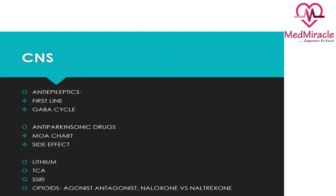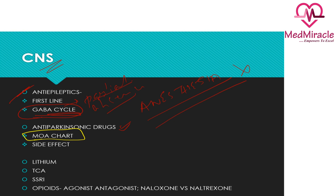Now coming to the central nervous system, anesthetic drugs will be covered in anesthesia — side effects and profiles will be covered there, so you don't have to read it in pharmacology. In pharmacology, what is important is anti-epileptics: know the first-line drugs for partial seizure, generalized seizure, and absence seizure. Similar to the autonomic nervous system, there is a GABA cycle here with various inhibitors and drugs acting on it. For anti-parkinsonism drugs, know the mechanism of action chart and the sites of action — mechanism is the most important point.